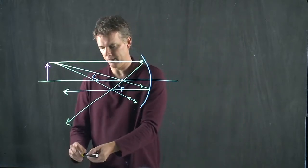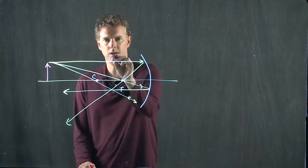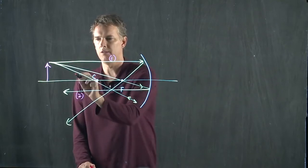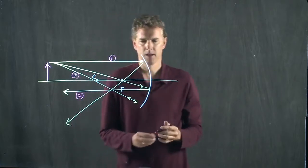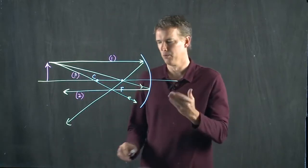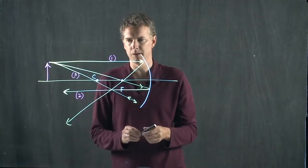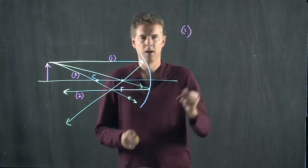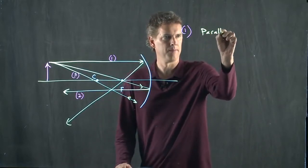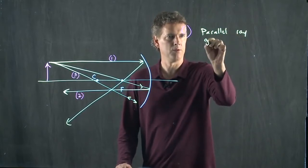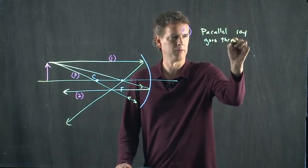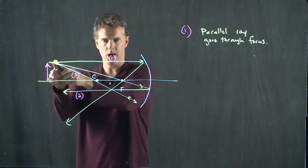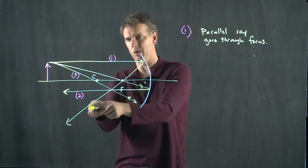Let's label those three rays. This is ray number one. This is ray number two. And this is ray number three. And let's see if we can identify the rules that we just wrote down for those three rays. So ray number one is the following. Parallel ray goes through the focus. And that's exactly what we drew. There was a ray that came in parallel. It bounced off the mirror, and it went through the focus.